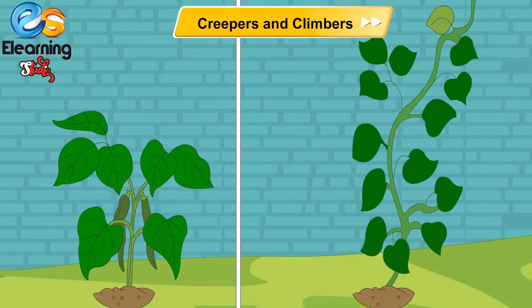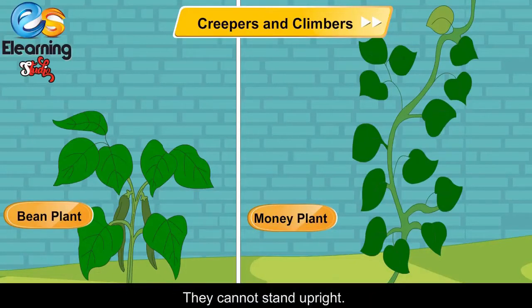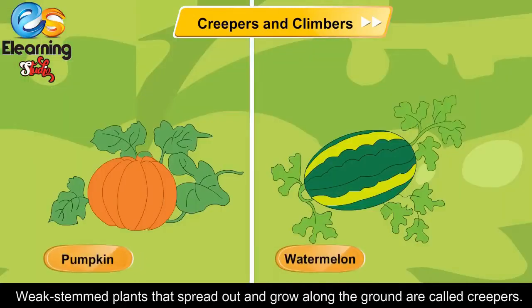Creepers and Climbers. Some plants have very thin and weak stems. They cannot stand upright. They are called climbers. They attach themselves to walls, sticks or other plants. Weak-stemmed plants that spread out and grow along the ground are called creepers.